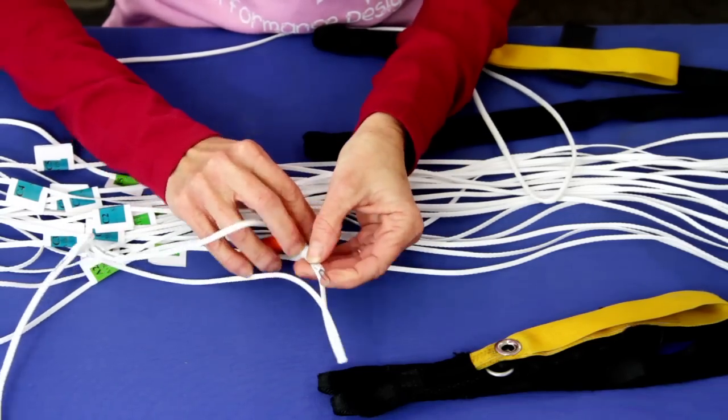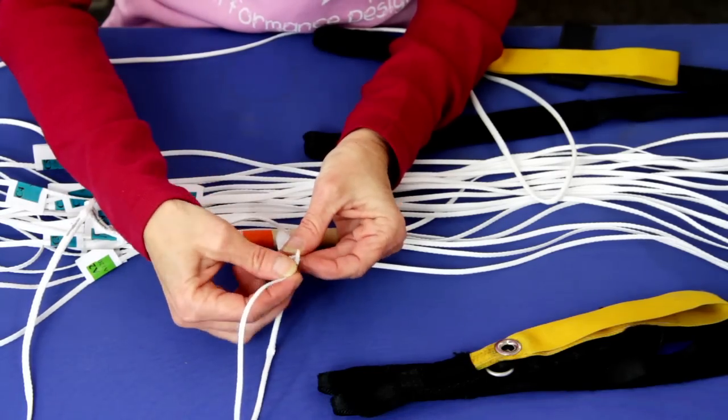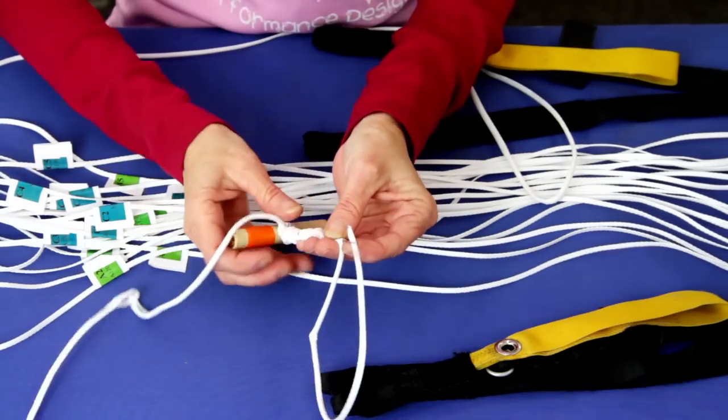Once you are at the black mark, pass the end of the wire fit out of the line. Feed the end of the line through the wire fit eyelet as shown and pull the line back through itself.